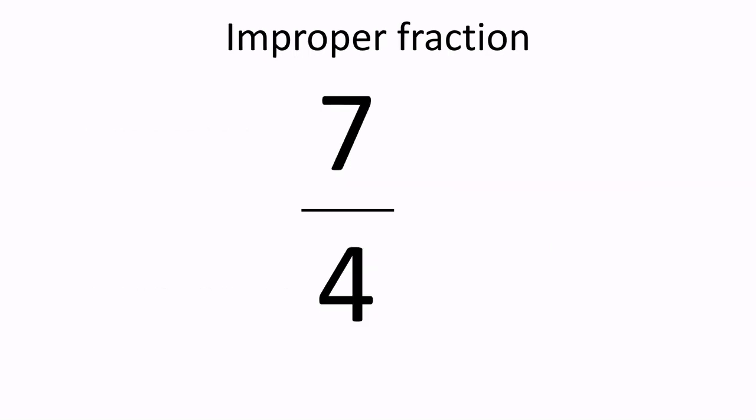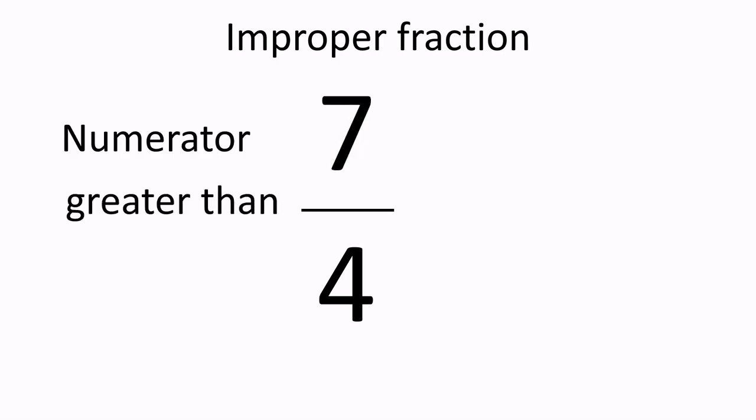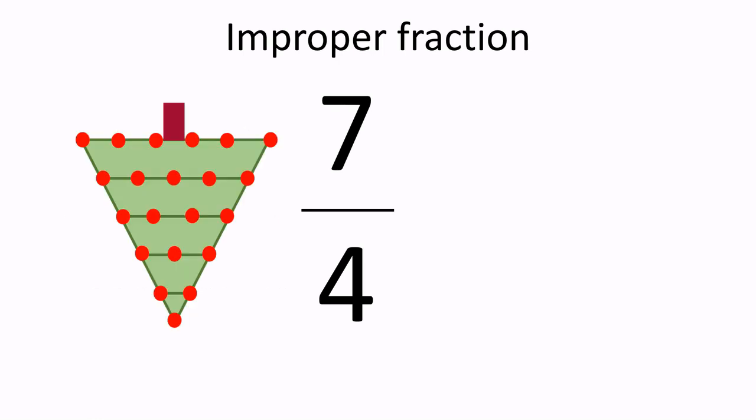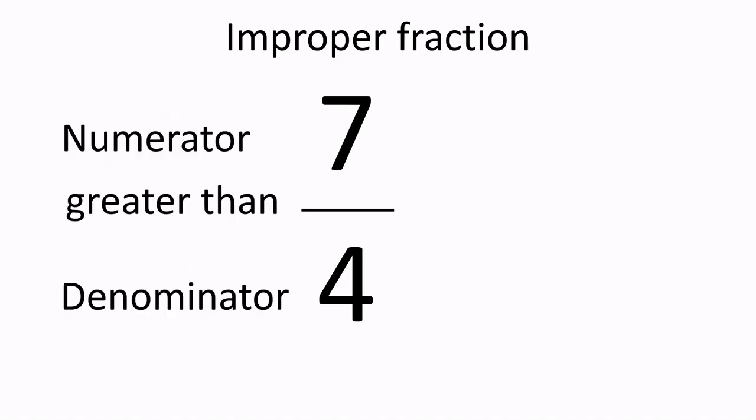In the improper fraction, the numerator is greater than or equal to the denominator. Let's talk about the first case — when the numerator is greater than the denominator. You can think of it as an upside-down Christmas tree: a lot of branches on top and a little bit on the bottom. In this example, seven is greater than four, so seven-fourths is an improper fraction.